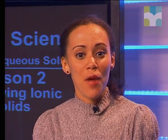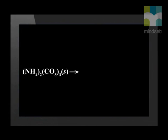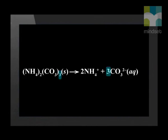Let's do a final example and write a balanced dissolution equation for ammonium carbonate. Ammonium carbonate breaks up into positive ammonium ions and negative carbonate ions with a charge of negative 2. Now let's check to see if it's balanced. We can see that we have two ammonium ions on the left-hand side and only one on the right, which means we need to place a 2 in front of the ammonium ion on the right. Checking the carbonate ions, there are three on the left-hand side and only one on the right, so we place a 3 in front of the carbonate ion on the right. Now it is balanced. Remember to add the phase indicators in brackets.